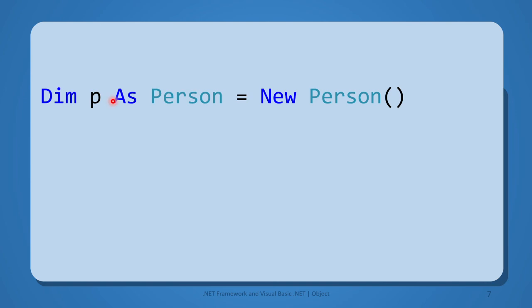This variable is going to hold an instance of the class Person. And here, in the right-hand side, we are creating or instantiating a new object. To instantiate a new object, we are going to use the keyword new.